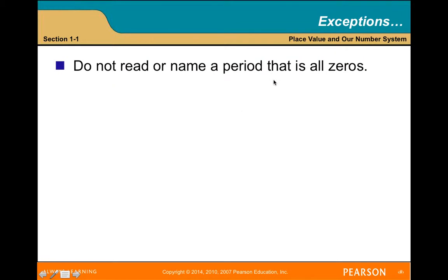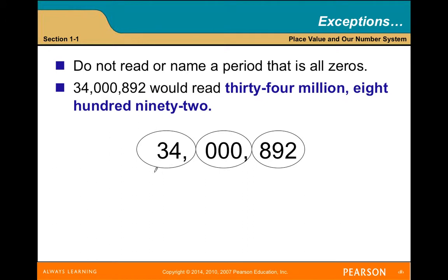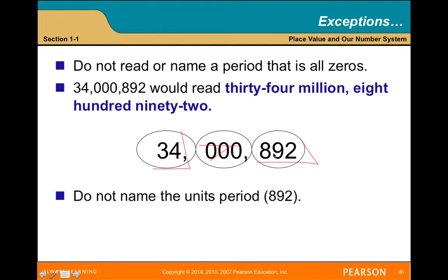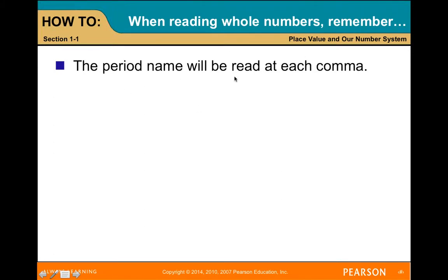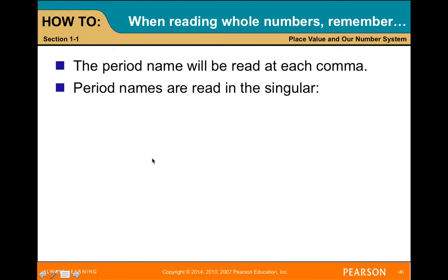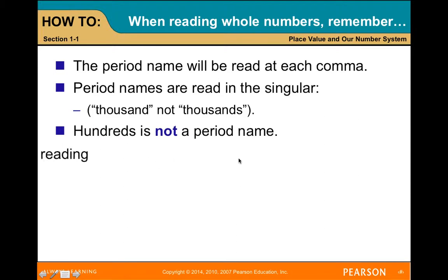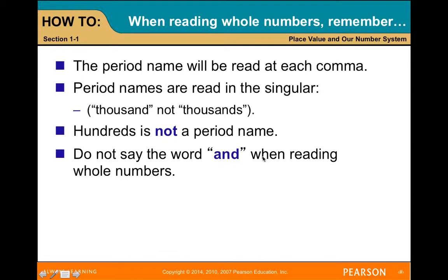Do not read or name a period that is all zeros — we skip over those. For instance, with this number we have the hundreds place, the hundred-thousands place, and the millions place. Since the thousands period is all zeros we don't say it, so this reads as 34 million 892. Also, do not name the units period — you wouldn't say '892 ones,' just 892. Period names are read in the singular: 'thousand,' not 'thousands.'